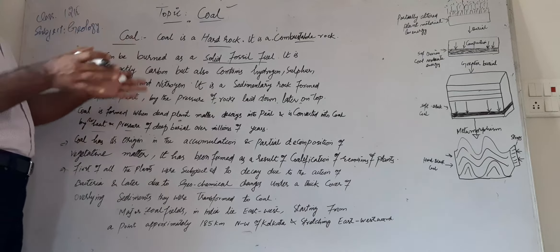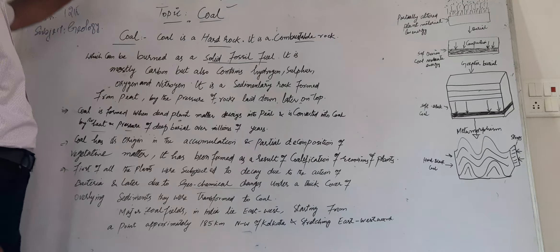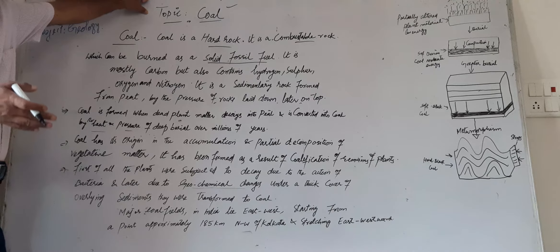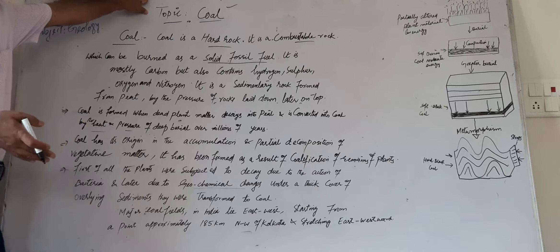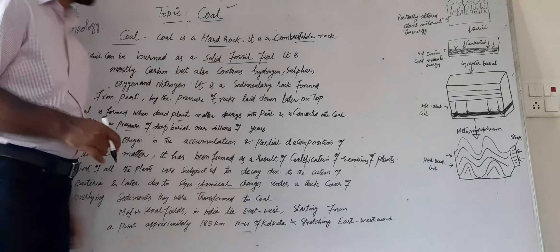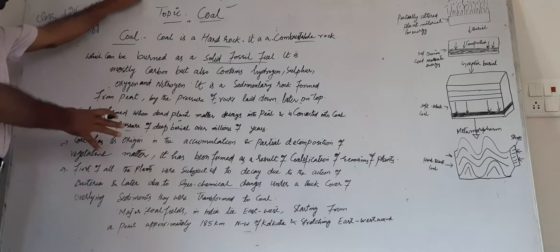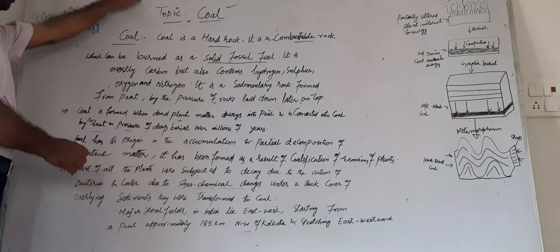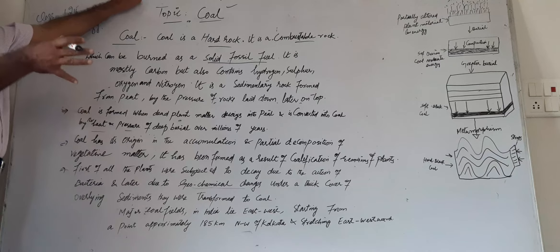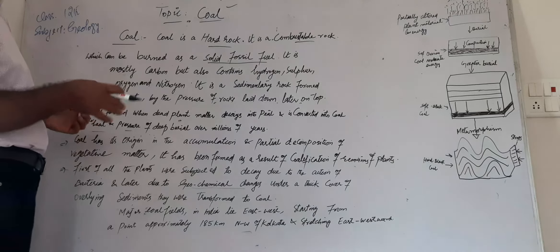The vegetative cover and remains of plants, which get decomposed and decayed, transform into coal. Major coal fields in our country lie in the east-west belt, starting from approximately 185 kilometers north-west of Kolkata and stretching east-westwards. We will discuss these coal fields in the next class.